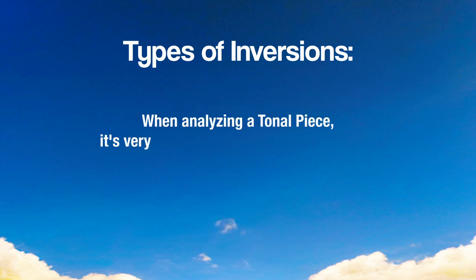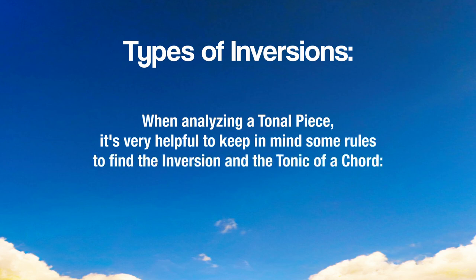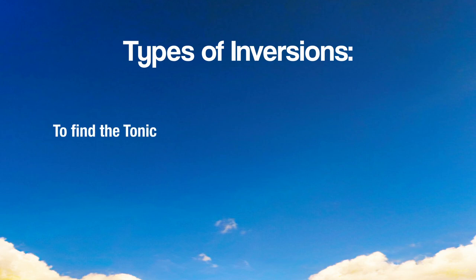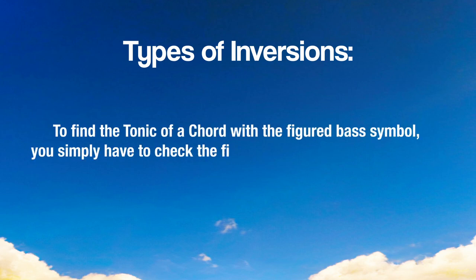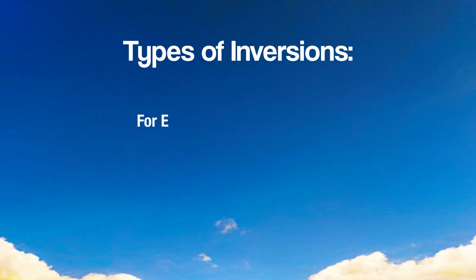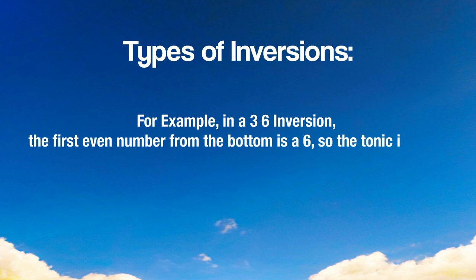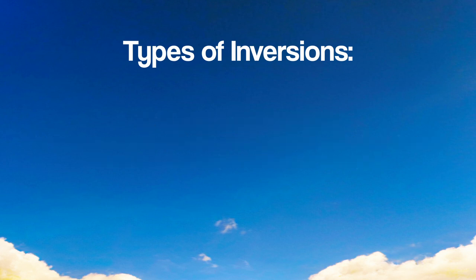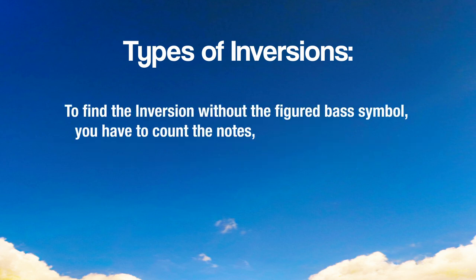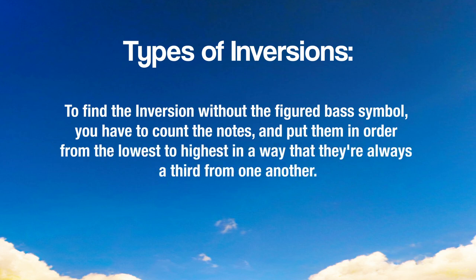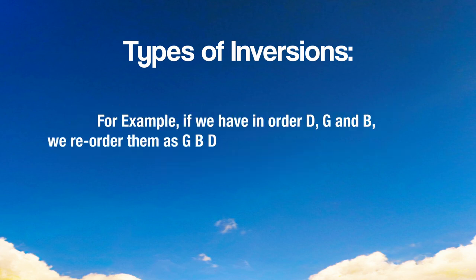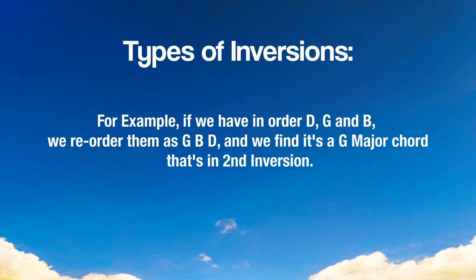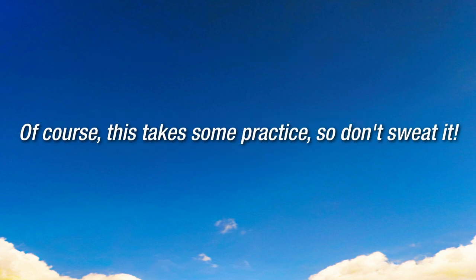When analyzing a tonal piece, it's very helpful to keep in mind some rules to find the inversion and the tonic of a chord. To find the tonic using a figured bass symbol, you simply check the first even number from the bottom. For example, in a 3-6 inversion, the first even number from the bottom is 6, so the tonic is a 6th from the bass note — for example, from E to C. To find the inversion without a figured bass symbol, count the notes and put them in order from lowest to highest so they are always a third from one another. For example, if we have D, G and B, we reorder them as G, B, D and find it's a G major chord in second inversion. This takes some practice, so don't sweat it.